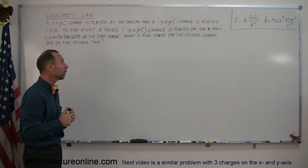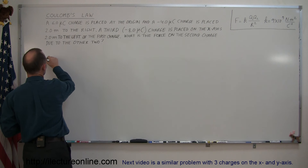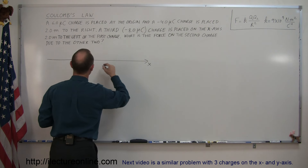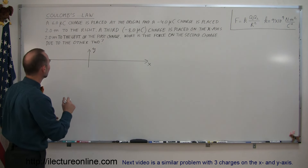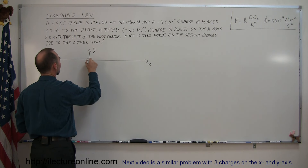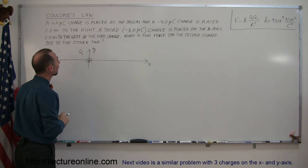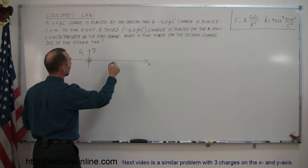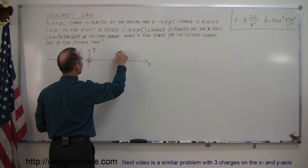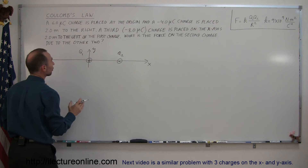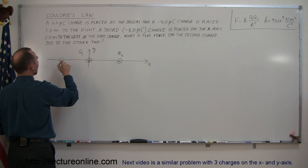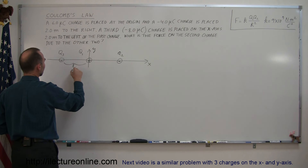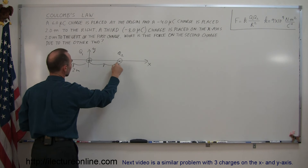To figure out how to do this problem, you want to put a nice little diagram together. So here's our x-axis and here's our y-axis. We don't need much of a y-axis because all the charges are placed on the x-axis. The first charge, right here at the origin, is a positive charge — we'll call this q1. We have a second charge placed 2 meters to the right, that's a negative charge — we'll call this q2. And then there's a third charge placed to the left, the same distance as q2 is to the right, and it's also a negative charge — this is q3.